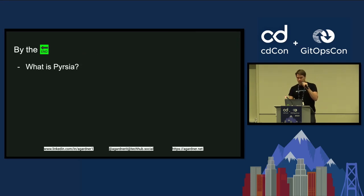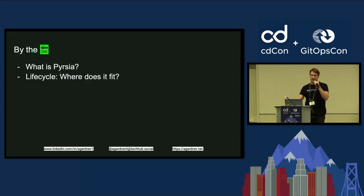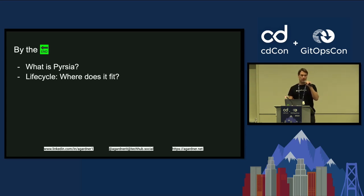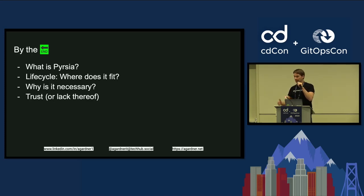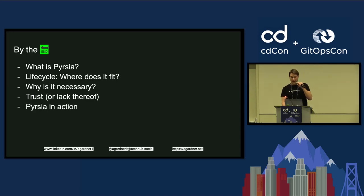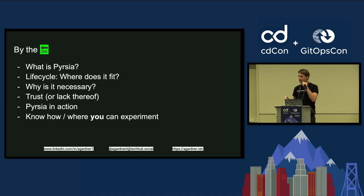So, by the end of today, what will we cover? You'll hear about what Persia is and where it fits in the life cycle alongside all the other tools — because all morning I've been hearing about tools and capabilities, so where does Persia actually fit in? Why is it actually necessary in the first place? Why do we need another thing? We'll talk a little bit about trust, or a lack thereof, and why that's important. And I'm going to show you Persia in action, and show you how and where you can experiment with it as well.